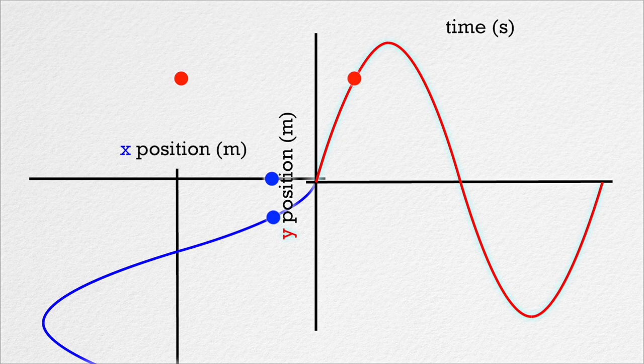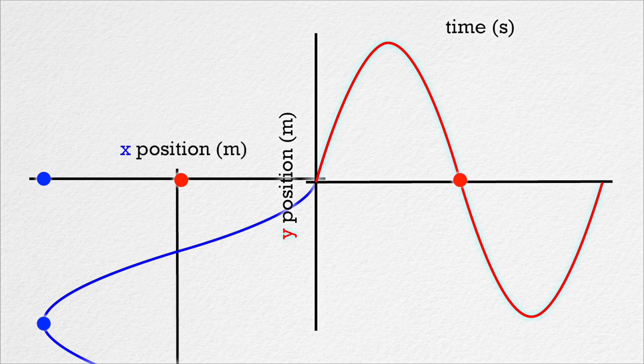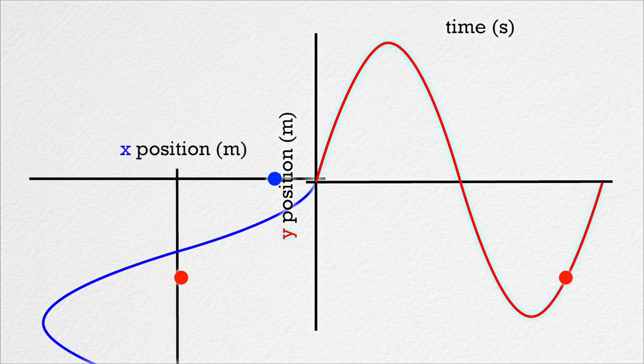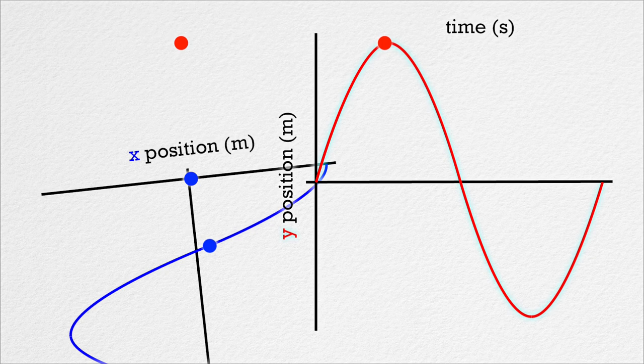Actually, no, the dot starts at its maximum value, so it's actually a cosine curve. Right, cosine. It's a cosine curve because it starts at its maximum value, thanks. Correct, Bobby. The curve created by the dot moving in simple harmonic motion in the x direction like this is a cosine curve.